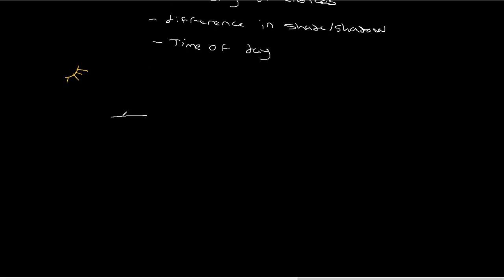We have a leaf on the surface of the earth — a green leaf. Over here in purple is our sensor. The sun's radiation is coming out, hitting the leaf, and bouncing back at the sensor. So this is going to get a value. This is time one. You've seen this sort of scenario before.